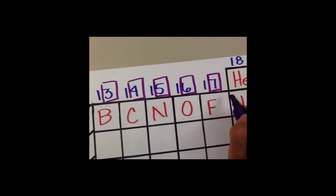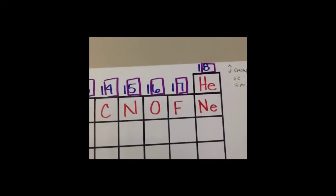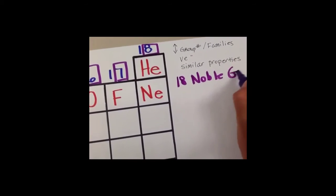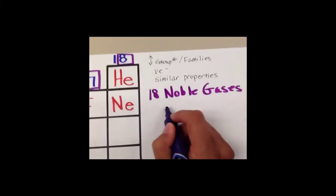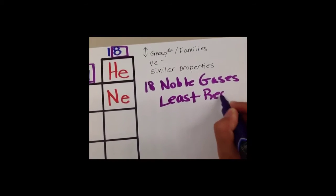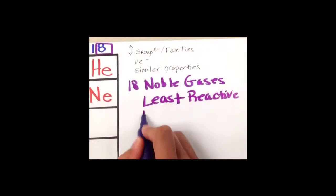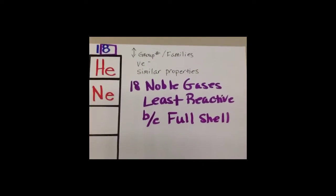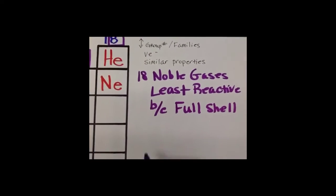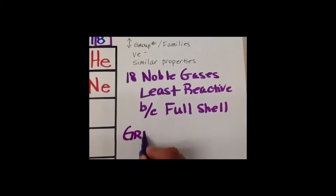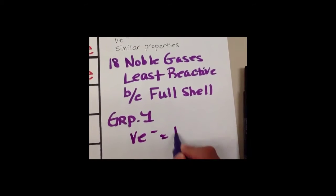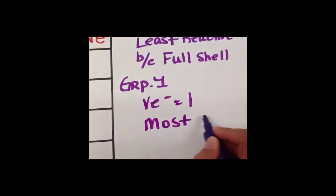Group 14 has four valence electrons, and so on. Group 18, which is known as the noble gases, are the least reactive because they have a full shell. So which group is the most reactive? Group 1 — group 1 has one valence electron, therefore being the most reactive.